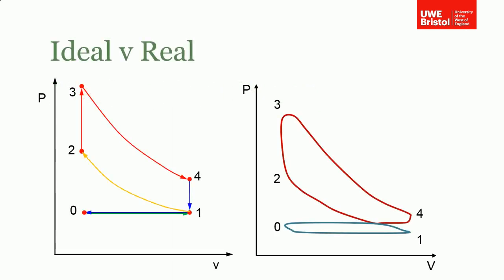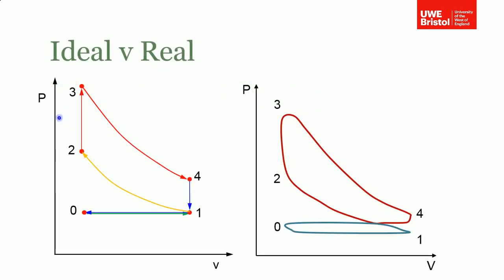What you see in front of you here is the PV diagram for the Otto cycle. Obviously this is the ideal one on the left and this is a real one here on the right. I'm just going to talk about the differences as we go around this cycle.